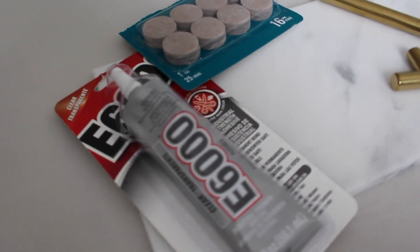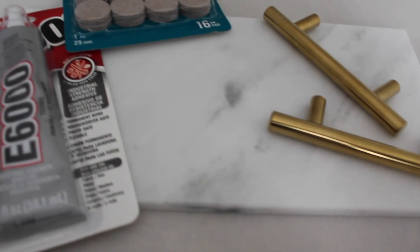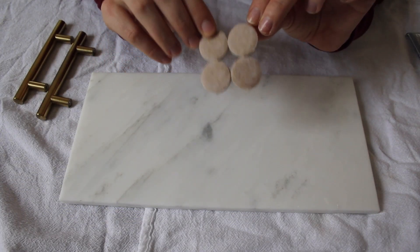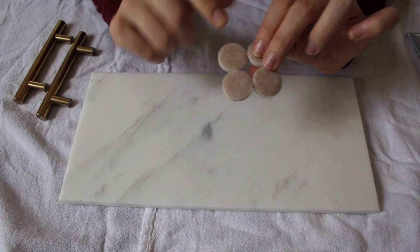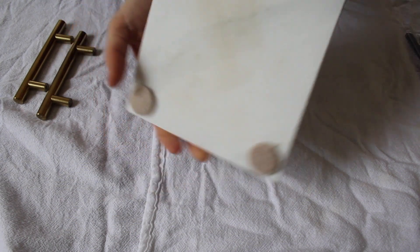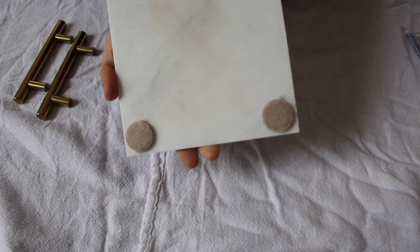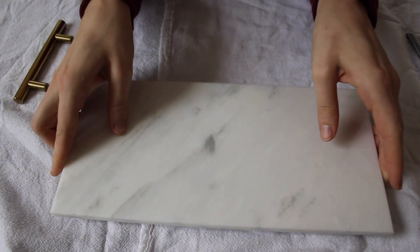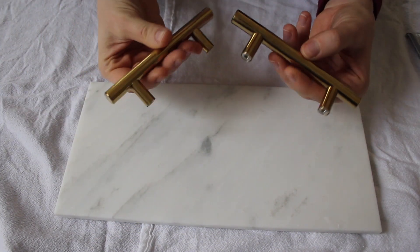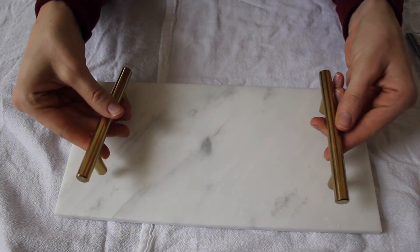Here's what you'll need: a marble tray, two gold drawer pulls, E6000, and felt furniture chips. Before this, I got some of these felt furniture tips and applied them on the bottom of your marble slab, one on each corner. This allows the marble slab to not cut up any surfaces that you want to put it on.